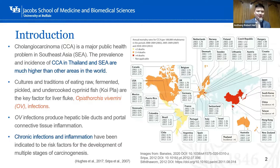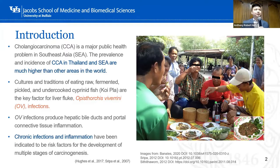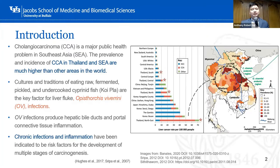Especially in Thailand, my hometown, the prevalence and incidence of CCA in Thailand and Southeast Asia are much higher than other areas around the world. The culture and traditions of eating raw, fermented, pickled, or undercooked Opisthorchis viverrini fish is the key factor of liver fluke infections. OV infections produce hepatic biliary and portal connective tissue inflammation, and chronic infection and inflammation have been indicated as key factors for the development of multiple stages of carcinogenesis.